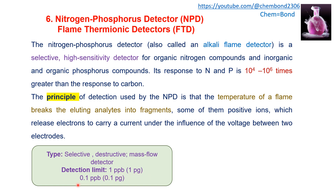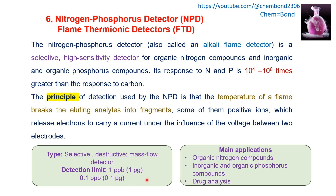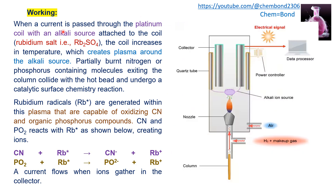The current is then amplified and recorded. NPD is a selective destructive mass flow detector. Detection limit is 1 ppb or 1 picogram per liter, or 0.1 ppb and 0.1 picogram per liter. Main applications include organic nitrogen compounds, inorganic and organic phosphorus compounds, and drug analysis. When a current is passed through a platinum coil, an alkali source — usually a rubidium salt — is attached to it. The coil increases the temperature, creating a plasma around the alkali source. The partially burned nitrogen and phosphorus-containing molecules exiting the column collide with the hot plasma bead and undergo a catalytic surface chemistry reaction.